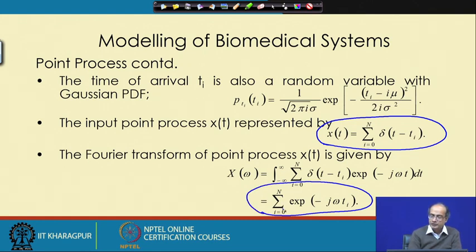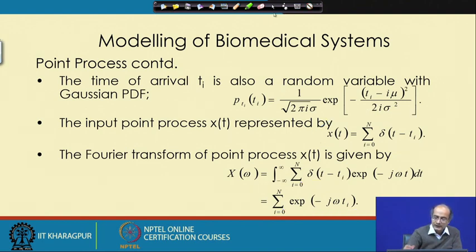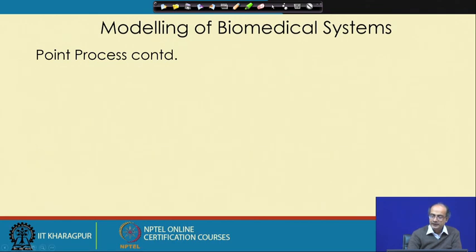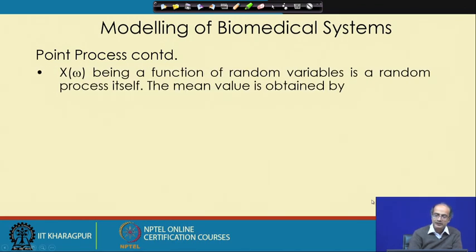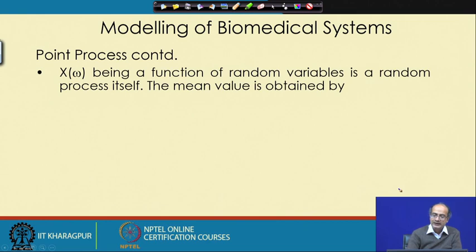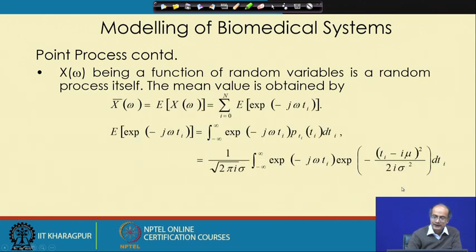We get a sum of exponentials, and with that X(ω) is defined. X(ω) also becomes a random variable because it is a function of Tᵢ, which is random. So X(ω) is also a random process, and we can compute its mean to understand the average behavior of the process X(ω).